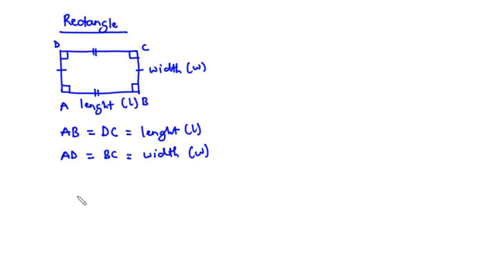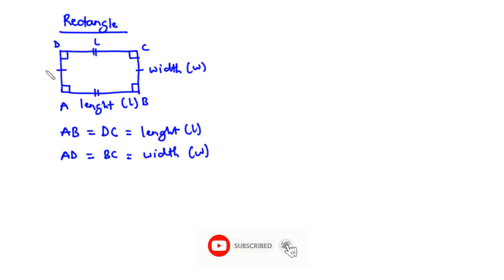Now let's talk about the perimeter and area of a rectangle. The perimeter is basically the length or the distance around its boundary. So if AB is L, then DC is also L, and if BC is W, then AD is also W.